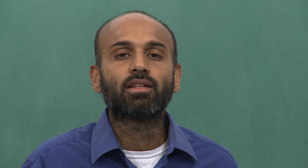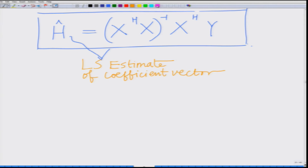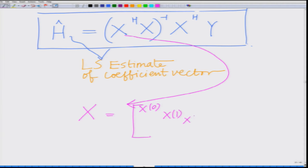So H_hat equals (X^H X)^{-1} X^H Y, which is the least squares estimate of the coefficient vector. Here Y_bar is the vector of outputs across the various subcarriers — the FFT of the received time-domain output samples — and X is the diagonal matrix of pilot symbols loaded onto the subcarriers. Notice something interesting: X is a diagonal matrix, which is invertible, with only diagonal entries non-zero and the rest zero.